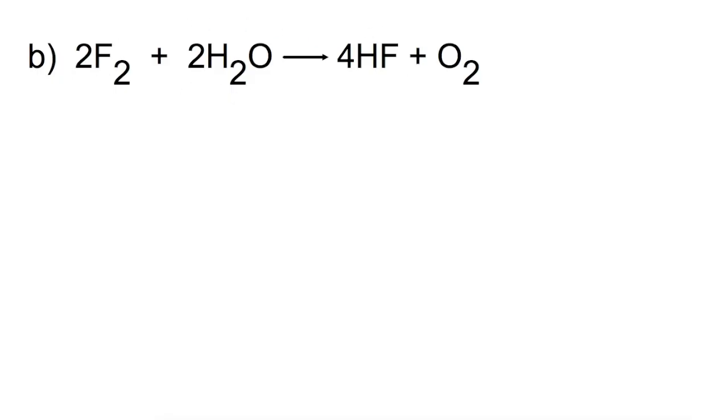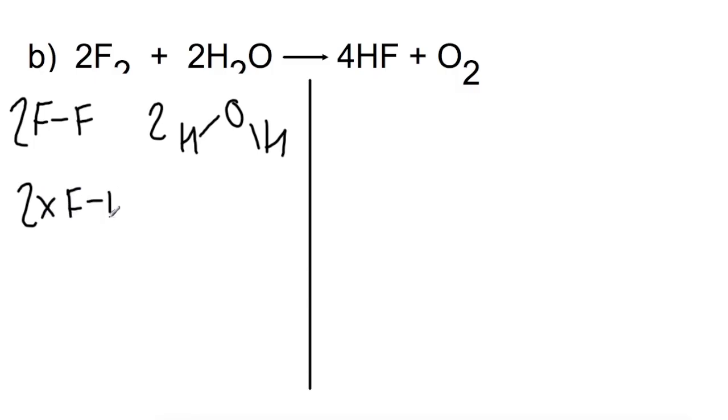For the second example, we have fluorine reacting with water to produce HF and O2. So here we would have two F-F and we would also have two water molecules being broken. So if we're breaking two F-F bonds, that's two times 159, which is 318.